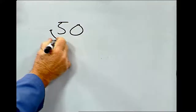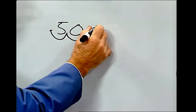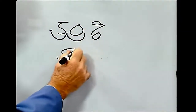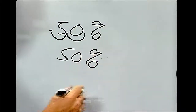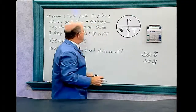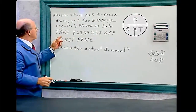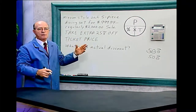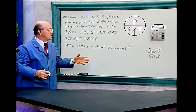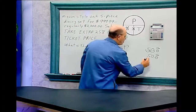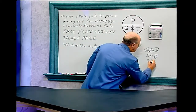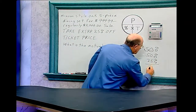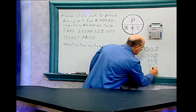Converting that to a percentage gives us 50%. Now the sign says take an extra 25% off the ticket price. Does that mean we get another 25%, giving us a 75% total discount?